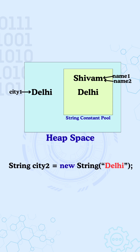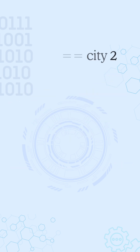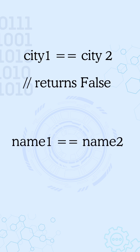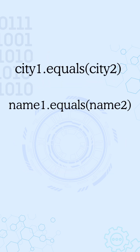However, if you create another string object like string city2 is equal to new string delhi, then a new object will again be stored in the heap memory. That's why city1 == city2 returns false and name1 == name2 returns true, because the city variables point to different locations in memory. But both city1.equals(city2) and name1.equals(name2) return true.